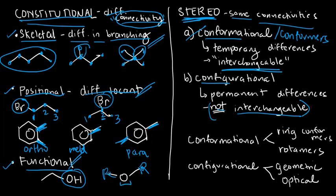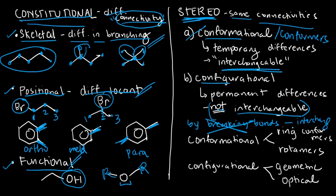To clarify: two configurational isomers are not interchangeable, meaning you cannot just rotate bonds and expect one isomer to become another. Maybe by breaking bonds and reattaching them you could perform the interchange, but breaking bonds is not an option normally. So we do not use breaking bonds in the terminology 'interchangeable' — it should only be rotating or twisting of bonds, no breaking involved. It won't make complete sense yet, so we'll go through them one by one.